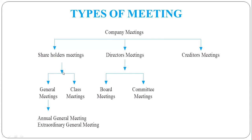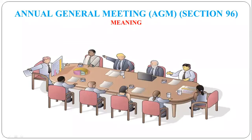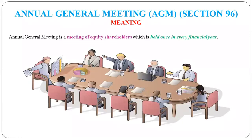First of all, the shareholders meeting is about the Annual General Meeting. The Annual General Meeting is the meeting of equity shareholders. Equity shareholders are the company's real owners - they purchase the company's capital for the lifetime of the company. So for the company's real owners, this is the company's annual meeting.